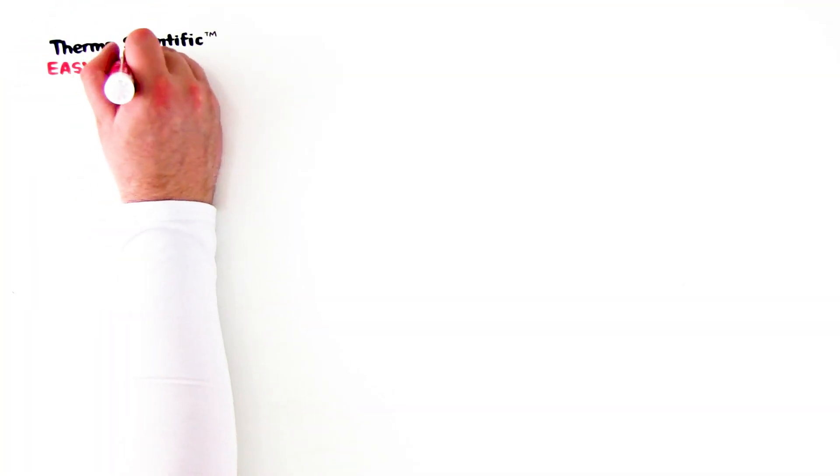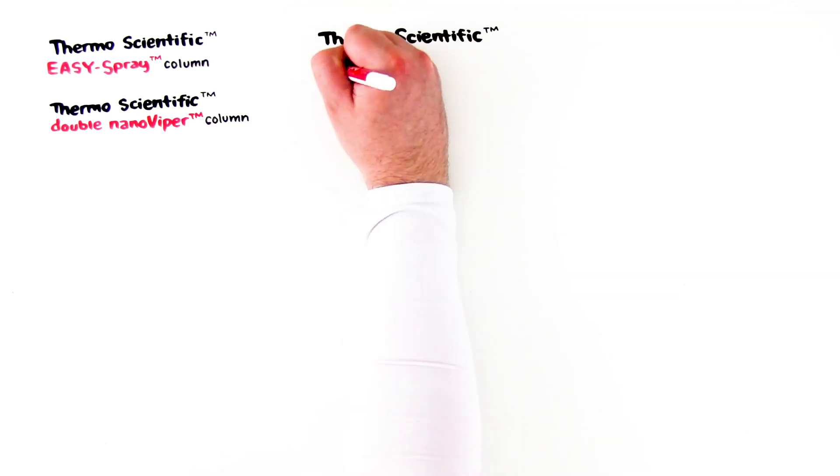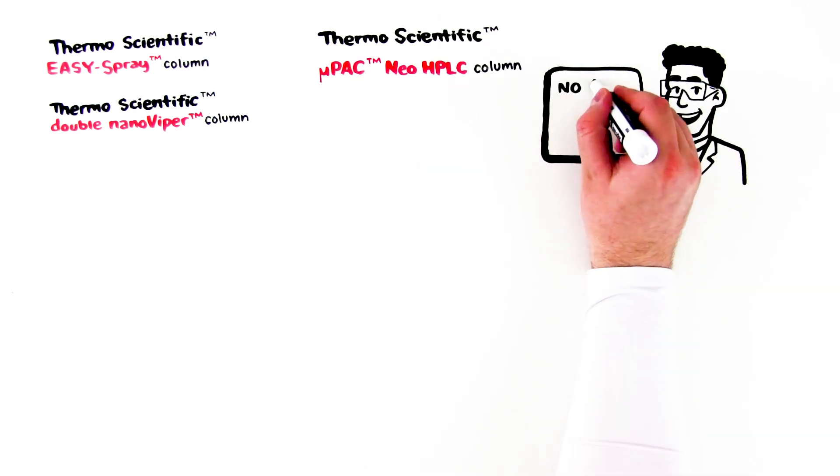The Thermoscientific Easy Spray, Thermoscientific Double Nano Viper, and Thermoscientific Micropack Neo HPLC columns are low-flow columns that help resolve the issue of tricky connections.